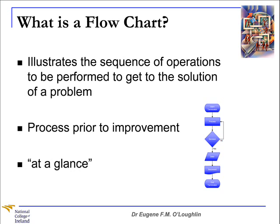What is a flowchart? A flowchart is a simple diagram that illustrates the sequence of operations to be performed to get to the solution of a problem. It allows you and your team to identify the actual flow or sequence of events in a process that any product or service follows. Flowcharts can be applied to anything from the travels of an invoice or the flow of materials to the steps in making a sale or servicing a product. It's very effective in determining how a process works prior to improvement, and it's a good tool to give you an at-a-glance view of a process or series of processes.